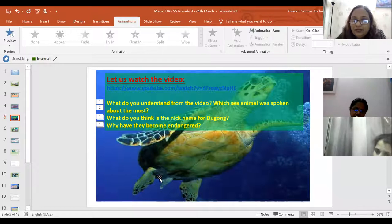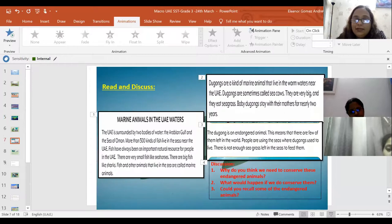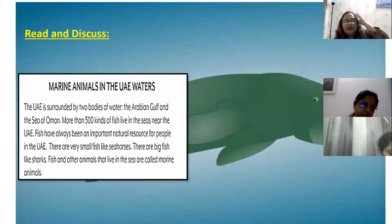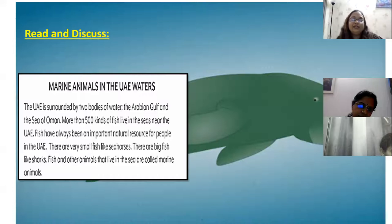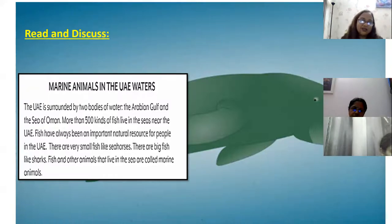Rama summarizes the video's message: we must protect this animal because it is going to become extinct. The teacher adds that UAE is surrounded by the Arabian Gulf and Sea of Oman, with many species of marine life. Small fish on the seashore thrive alongside dugongs in shallow waters where seagrass grows, forming the dugongs' food source and supporting the ecosystem.